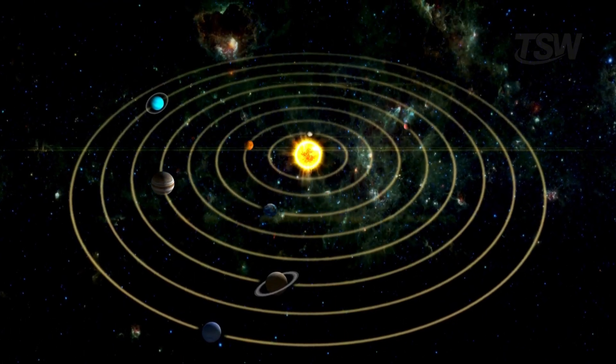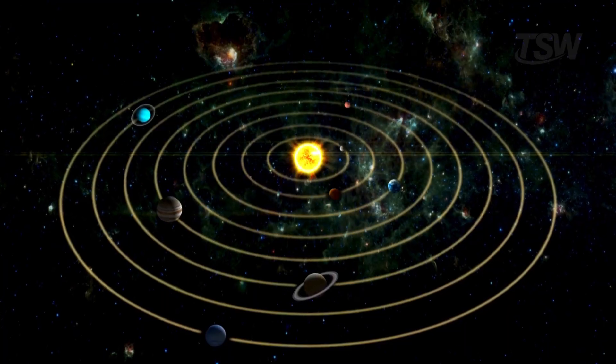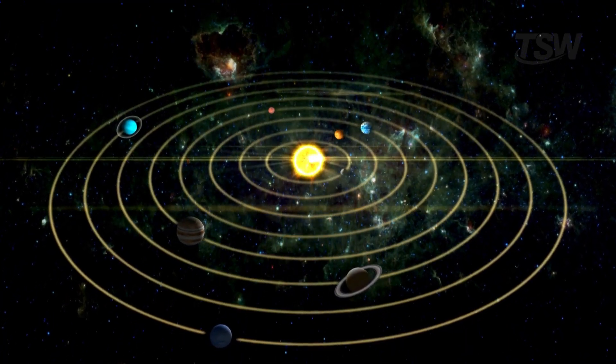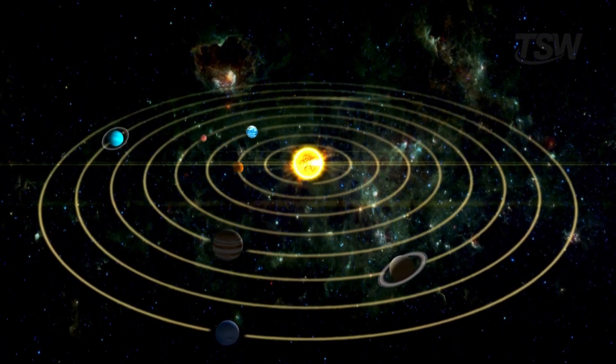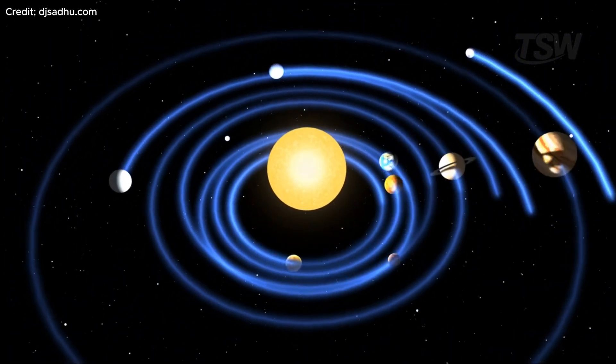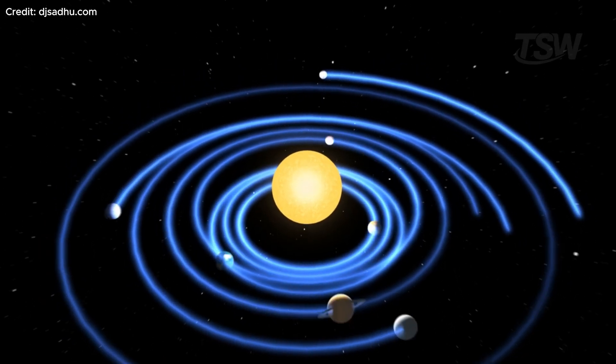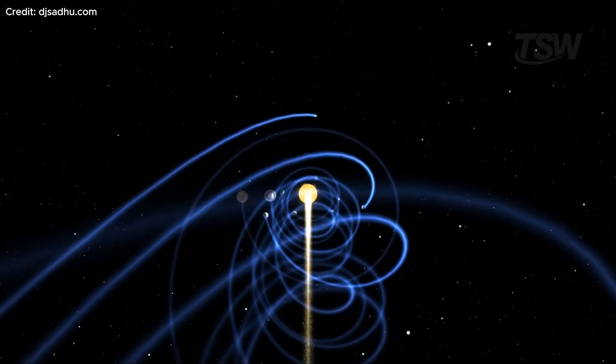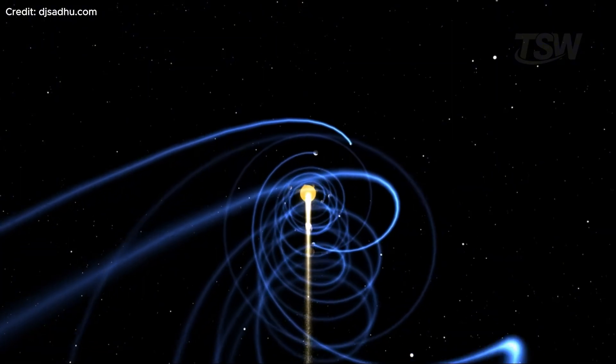The idea that the solar system is flat and fixed comes from our human need to simplify the incomprehensible. But the universe is anything but simple. Nothing is still. Not the sun, not Earth, not you.